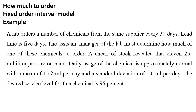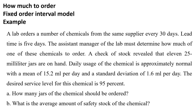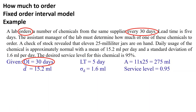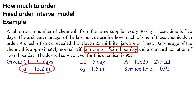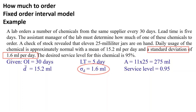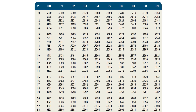Another example: a lab orders a number of chemicals from the same supplier every 30 days; lead time is 5 days. The assistant manager of the lab must determine how much of one of these chemicals to order. A check of stock revealed that 11 jars of 25 milliliters are on hand. Daily usage of the chemical is approximately normal with a mean of 15.2 mL per day and a standard deviation of 1.6 mL per day. The desired service level for this chemical is 95%. The givens are: OI = 30 days, LT = 5 days, A = 11 × 25 = 275 mL, D̄ = 15.2 mL, σD = 1.6 mL.